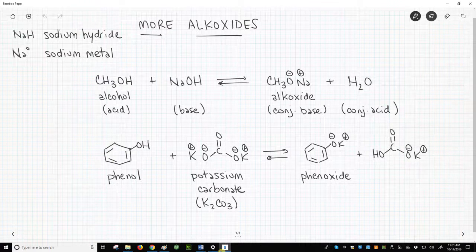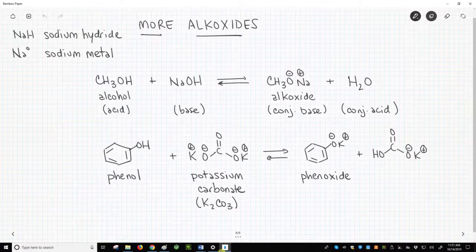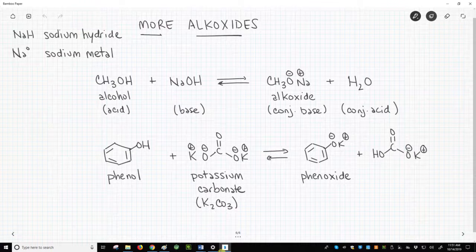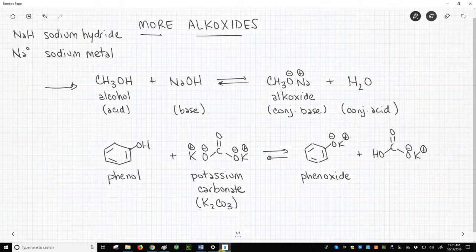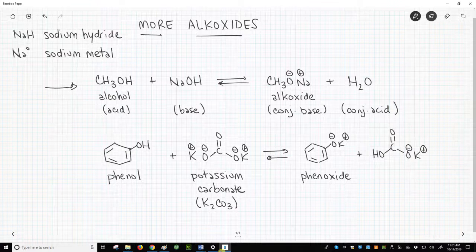Sodium hydride is essentially a really strong base. So why not use a more common base like sodium hydroxide instead? Great question. Here on the top of the slide is the reaction of an alcohol, which acts as an acid, with sodium hydroxide, a base, to form an alkoxide, the conjugate base, and water, the conjugate acid.